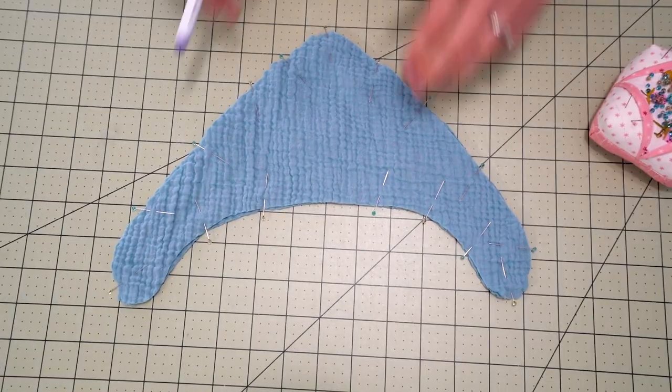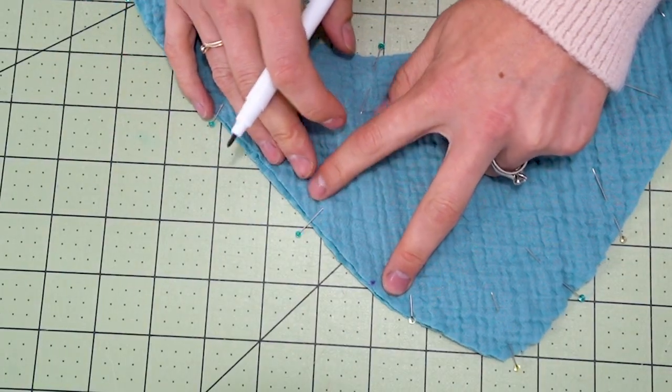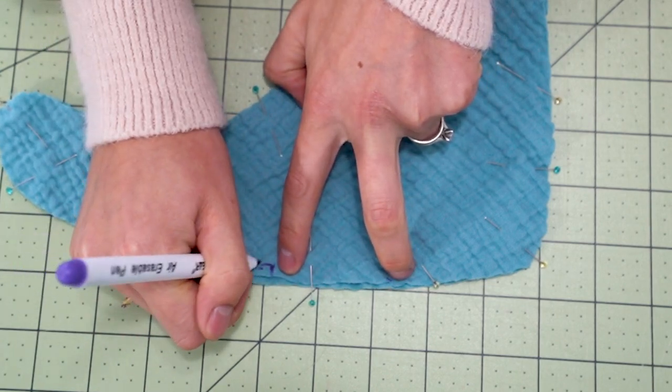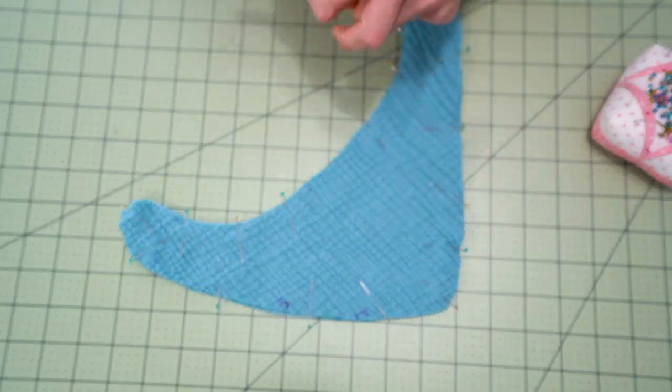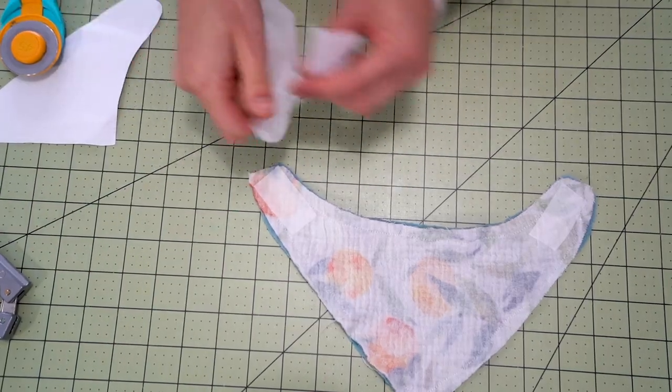So next you are going to go in and you are going to mark an area that we are going to turn this. So we are going to mark about two inches. So I am just using my grid here and we are going to stitch on either side which means we are going to start on one side, stitch all the way around and leave a gap of two inches.